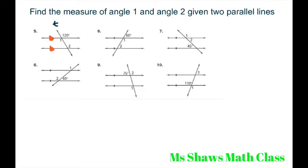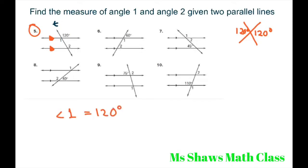Starting on the first one – these are intersecting lines for number 5. The intersecting line theorem says that if this is 120 degrees, then angle 1 equals 120 degrees. I also know from the alternate interior angle theorem, given two parallel lines, that they are congruent, so angle 1 is congruent to angle 2.